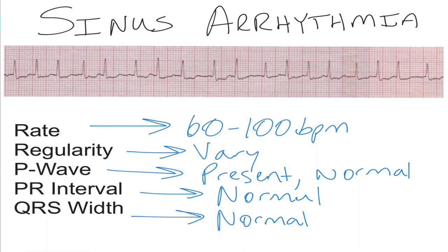Remember, a normal PR interval is going to be within one small but one large box on your EKG paper, and your QRS width should be within three of those tiny boxes found within one large box. If you have all these things present, there's a pretty good chance you're looking at a sinus arrhythmia.